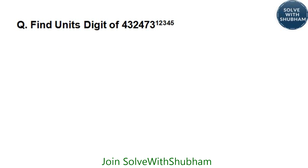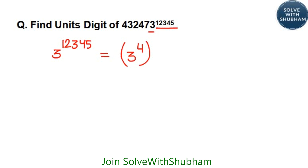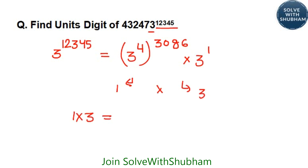Find the units digit of 432473 to the power 12345. As discussed, only the unit digit of the base and the power matter. So we find the units digit of 3 to the power 12345. Representing in terms of 3 to the power 4x: dividing 12345 by 4 gives 3086 remainder 1, written as 3 to the power (4×3086) into 3 to the power 1. This ends with 1 times 3, so our answer is 3.